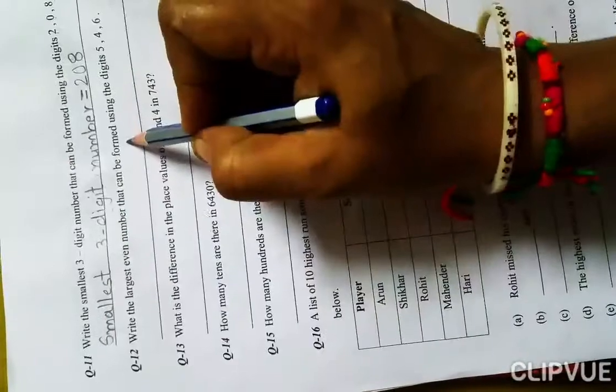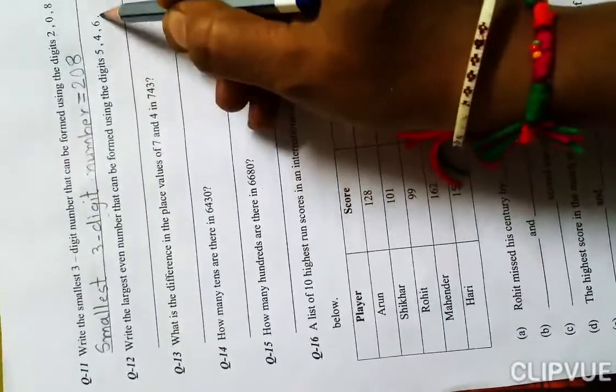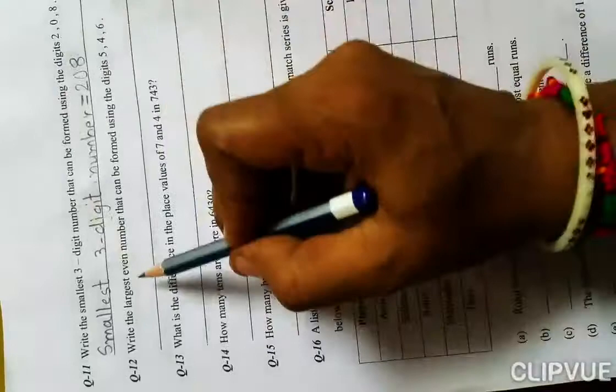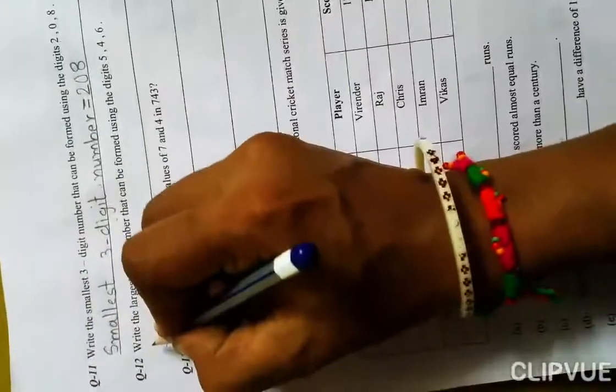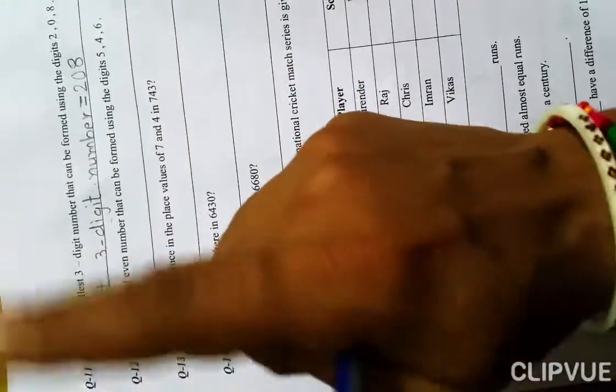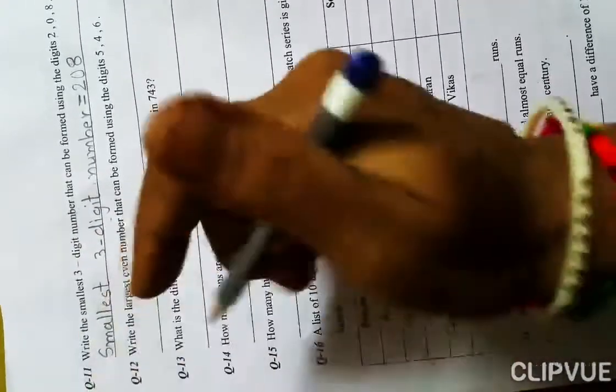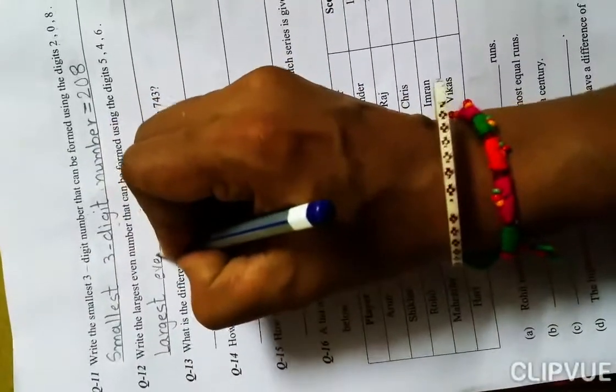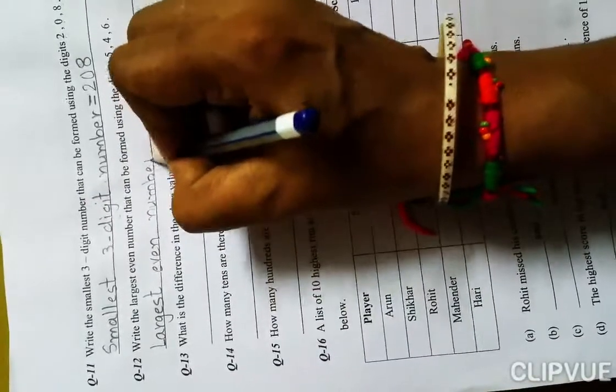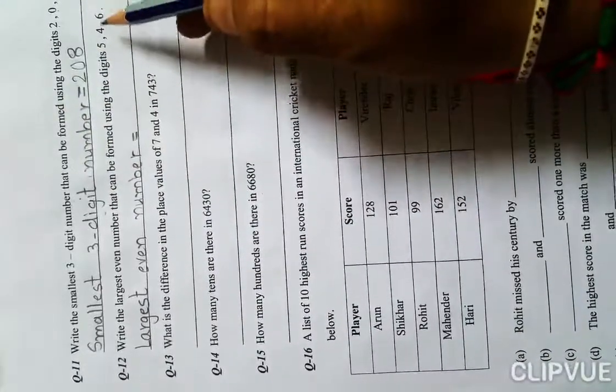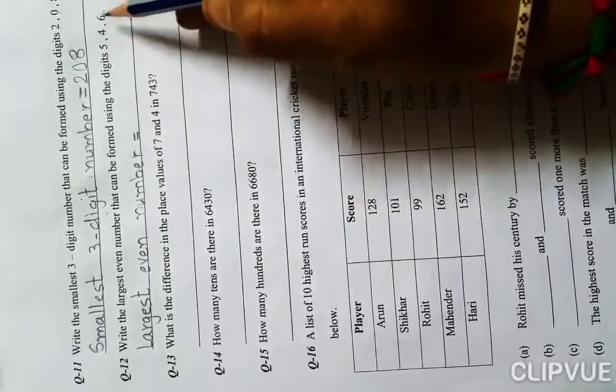Next question: write the largest even number that can be formed using digits 5, 4, 6. Using these digits we make the largest even number. Even number means your ones place should be 2, 4, 6, 8, or 0. First we write largest even number equals...